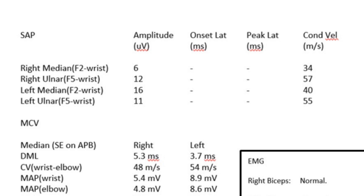Here the amplitude is 16 microvolts and 40 metres per second. The amplitude is normal but the conduction velocity is slow — it's less than the 50 metres per second we would have been expecting. The ulnar sensory response is 11 microvolts in amplitude and 55 metres per second, so it's of normal amplitude and normal conduction velocity, very symmetrical to the other side. To recap: the median sensory responses are both slow, more so on the right side than the left, and the amplitude is reduced somewhat on the right compared to the left.